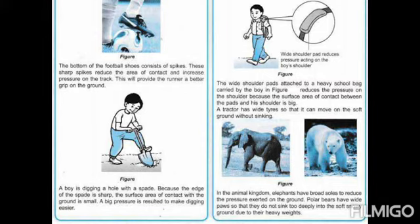If you walk on the ground, it is always easier to walk with flat shoes or flat slippers. But if you wear heels, it is not easy to walk. Why? Because the heel is sharp and pointed, so the area of contact is very limited. When you move on the ground, the pressure is high and you cannot move easily. With a broad area of contact, you move easily; if the area is reduced, pressure increases and movement becomes difficult.